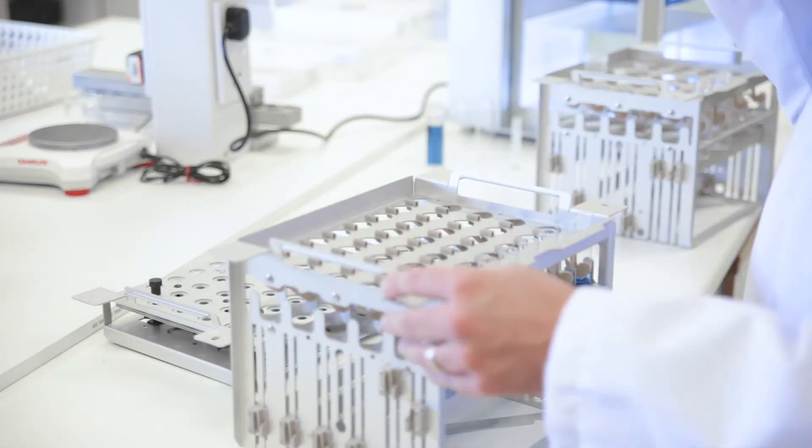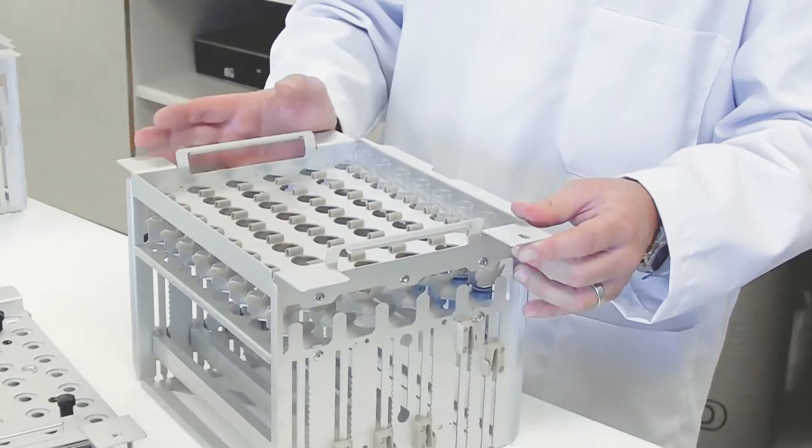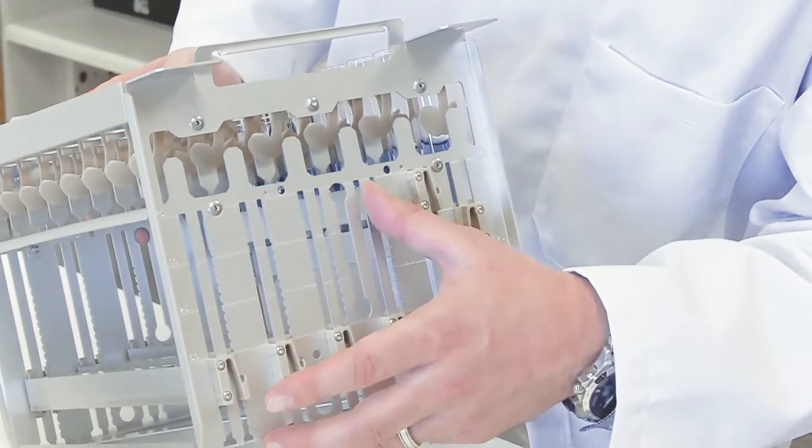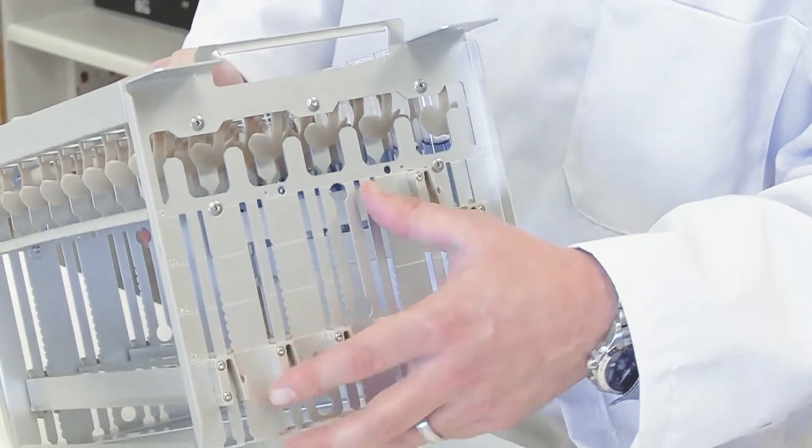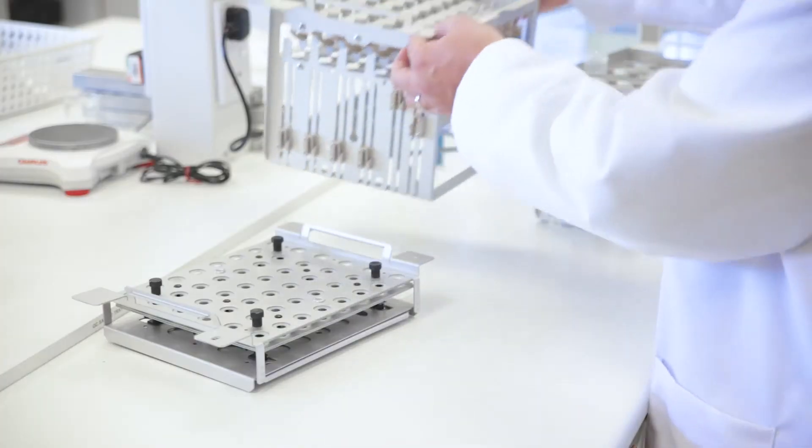We've got the 48 position rack here. This will take sample tubes from 10 to 20 millimeters outer diameter, from 75 millimeters in length up to 150 millimeters in length. There's a vast amount of flexibility in these racks.